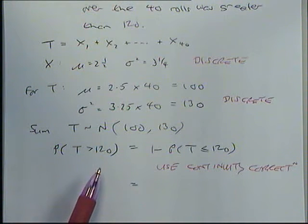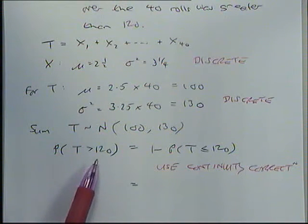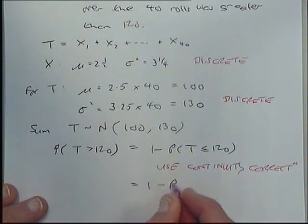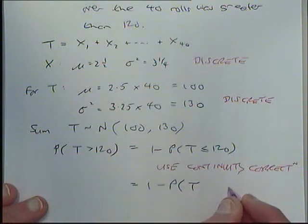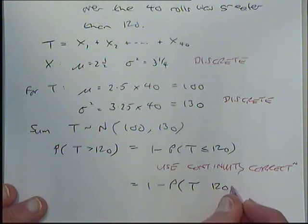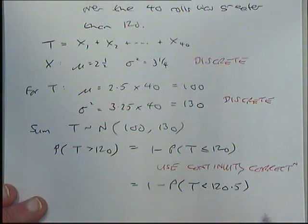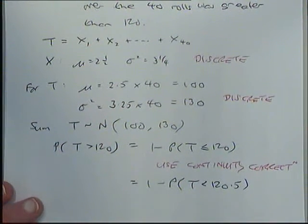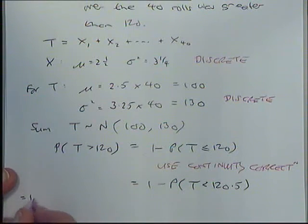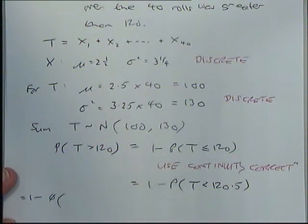So the opposite of greater than 120 is less than or equal to 120. So I've got to make sure I am including 120. What number do I put here? It's correct, 120.5. That is after I've used the continuity correction. And now that just becomes a straightforward normal question. 1 minus phi of, and so on.